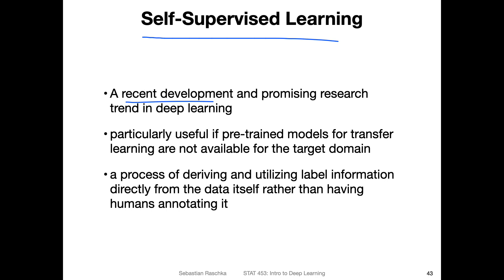It's usually about pre-training a model on a larger dataset and then fine-tuning it on a smaller dataset. This is sometimes also called transfer learning, because we are transferring the model from one task to another task. It's called self-supervised learning because we are deriving or utilizing label information directly from the data itself, rather than having humans annotating it.